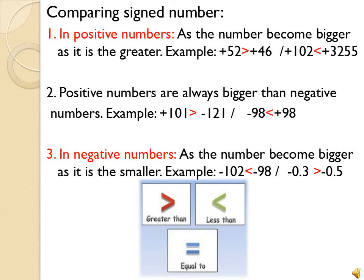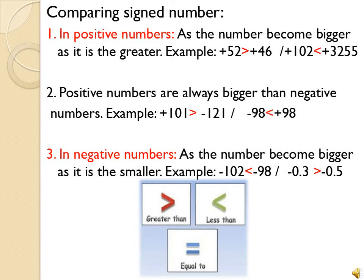For example: plus 52 and plus 46 — لأننا عندنا نفس الصين, فأكيد الأكبر هيكون الأعلى. So plus 52 is greater than plus 46. Plus 102 comparing with plus 3,255 — مين الأكتر أكيد 3,255, so it is the greatest لأنه هو الأعلى. Now if we are comparing a positive number مع negative number — عطول دايما the positive is greater than the negative number.